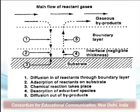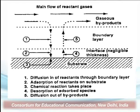In the chemical method, these are the steps. The main flow involves reactant gases. Step 1 is the diffusion of reactants through the boundary layer. Step 2 is the adsorption of reactants on the substrate. Step 3 is the chemical reaction, which takes place on the surface. Step 4 is the deposition of adsorbed species. Step 5 is the diffusion out of byproducts. These are the 5 steps involved in the chemical vapor deposition method.